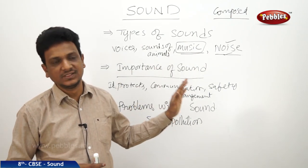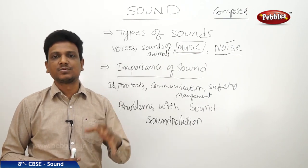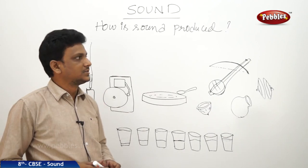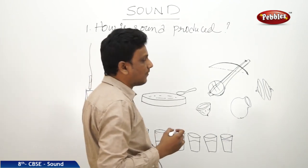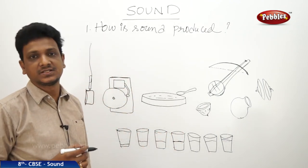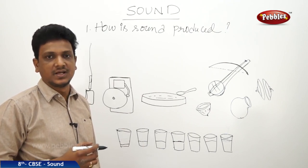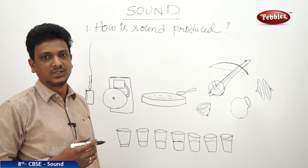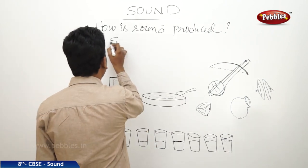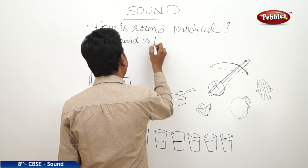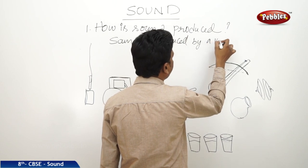So we got a general idea about sound — this is the introduction. Now what we are going to learn is some physical properties of sound. The first thing we are going to study is: how is sound produced? We have seen the different types of sounds, the importance of sound, and the disadvantages of sound. Now the question is: how is sound produced?